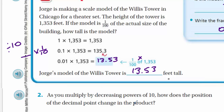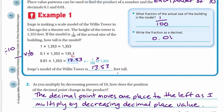Look at number two here. As you multiply by decreasing powers of 10, how does the position of the decimal point change in the product? These are all powers of 10, but decreasing — one-tenth, one one-hundredth. The decimal point moves one place to the left each time we multiplied by a decreasing decimal place value, which you can also call decreasing powers of 10.